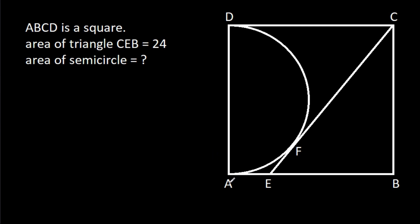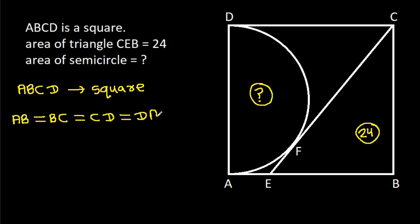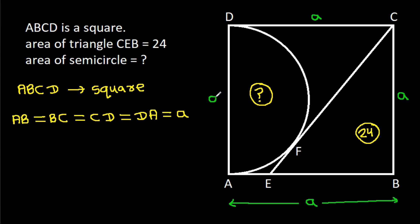In this video, we have been given that ABCD is a square and the area of triangle CEB is 24. We have to find the area of the semicircle. Since ABCD is a square, that means AB = BC = CD = DA. Suppose each side is A, so AB is A, BC is A, CD is A, and DA is A.